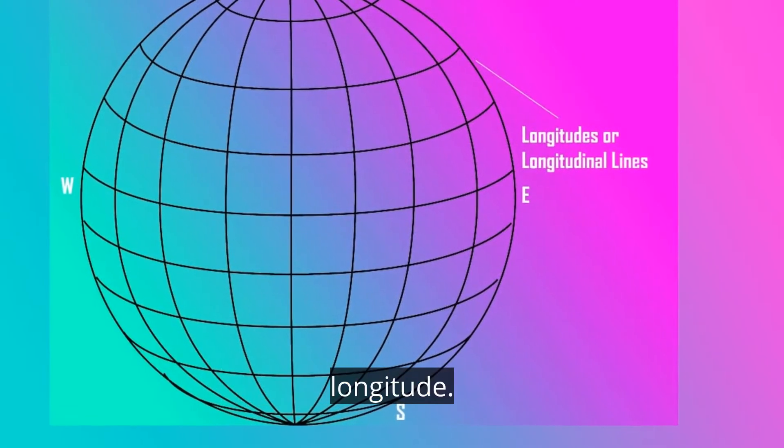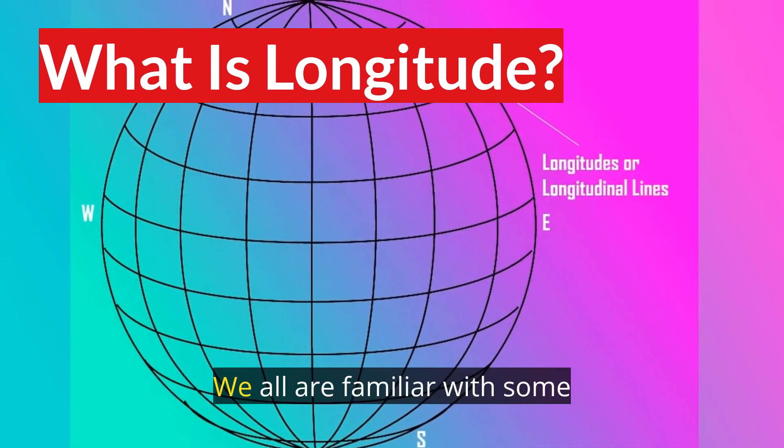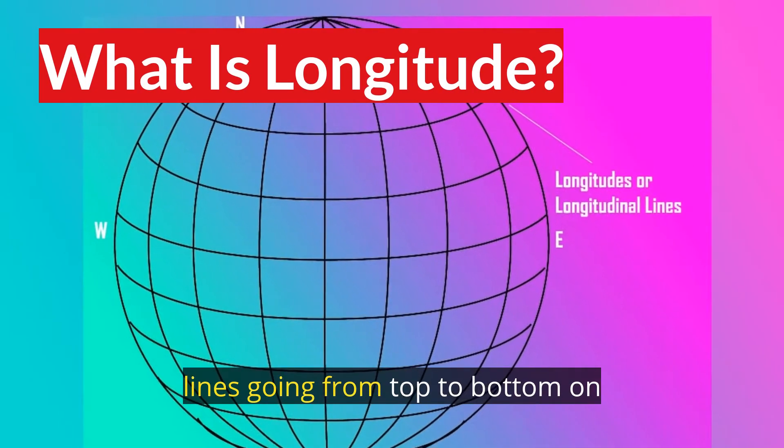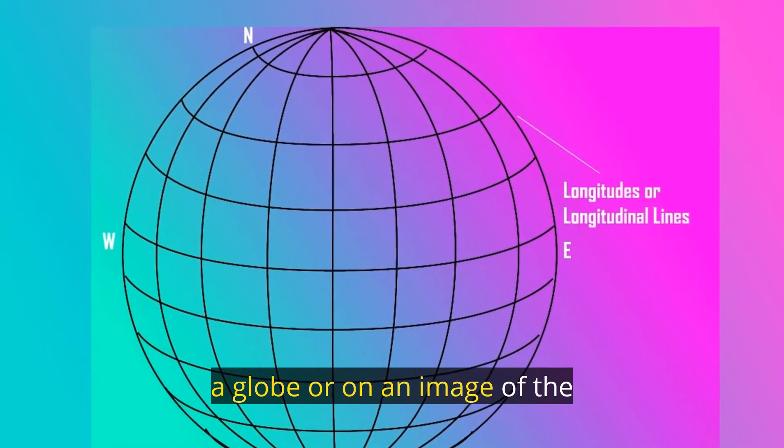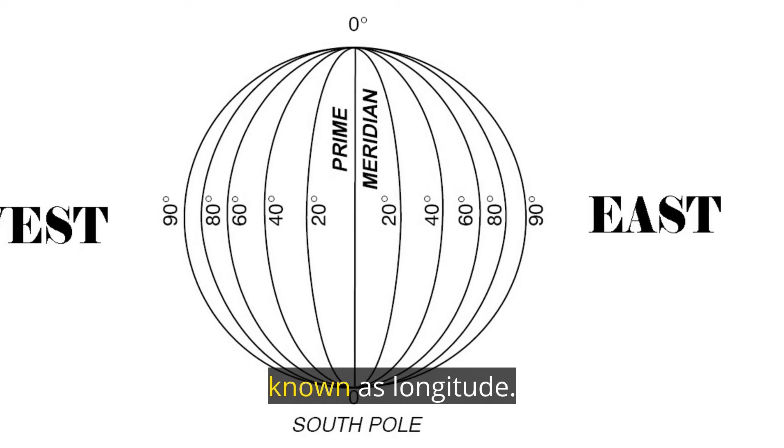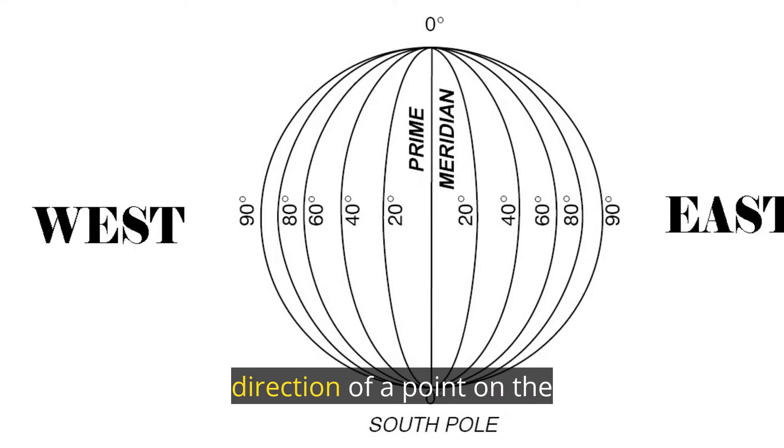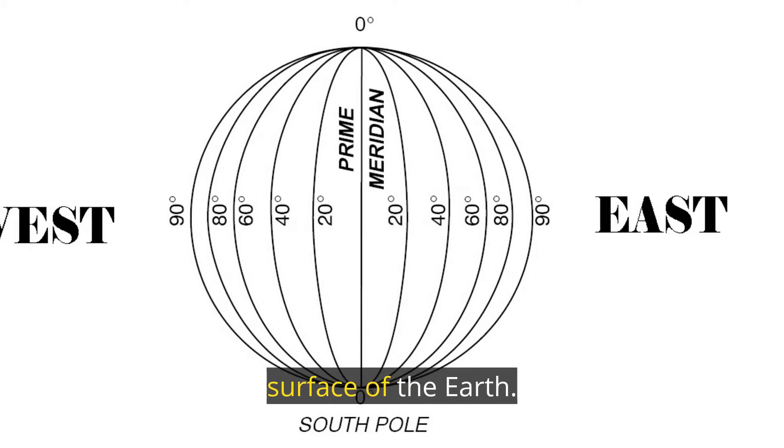Today we will discuss about longitude. What is longitude? We all are familiar with some lines going from top to bottom on a globe or on an image of the earth or on a map. Well, these imaginary lines are known as longitude. Longitude is a geographical coordinate defining the east-west direction of a point on the surface of the earth.